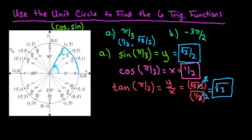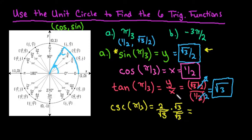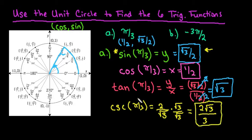Now we're going to talk about the three reciprocal functions. Remember that cosecant is the reciprocal of sine. So we just flip the equation — the reciprocal of square root 3 over 2 is 2 over the square root of 3. In math we are not allowed to leave a radical in the denominator, so we rationalize the denominator by multiplying by square root 3 over square root 3, which is essentially 1. When we do that we end up with 2 square root 3 over 3. Since it's a reciprocal function it's easier just to flip it.